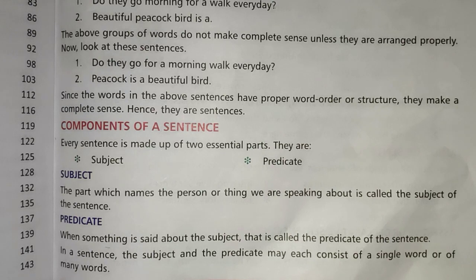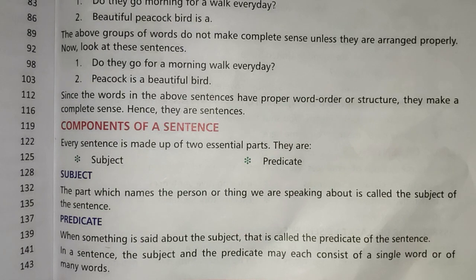Let's have a look at the definition of a predicate. So when something is said about the subject — if something has been said about that particular subject we have discussed — then that is called the predicate of a sentence. The subject and the predicate may each consist of a single word or of many words.